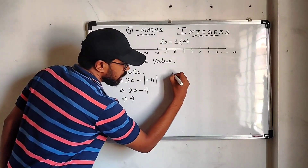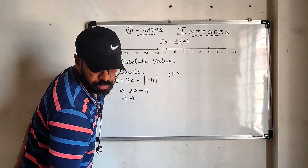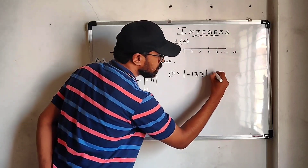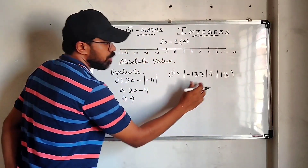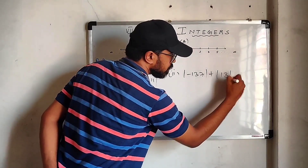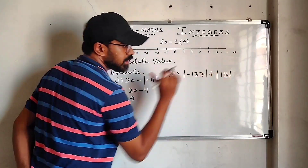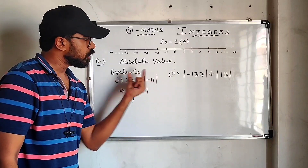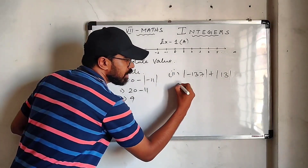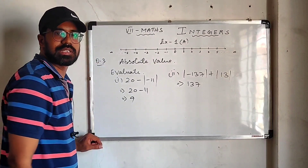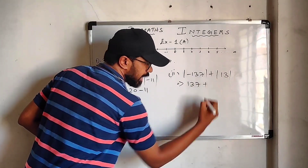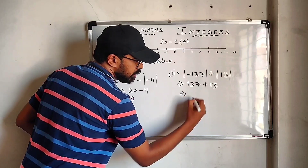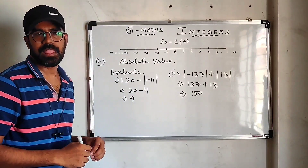Another example: modulus of minus 137 plus modulus of 13. The absolute value of minus 137 is 137 — the number itself regardless of its sign. The absolute value of 13 is 13. So 137 plus 13 equals 150.